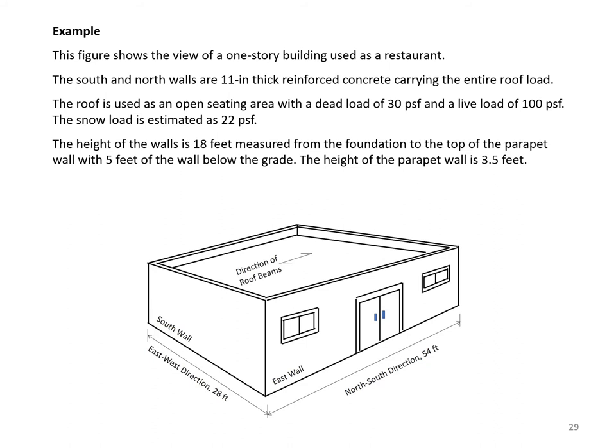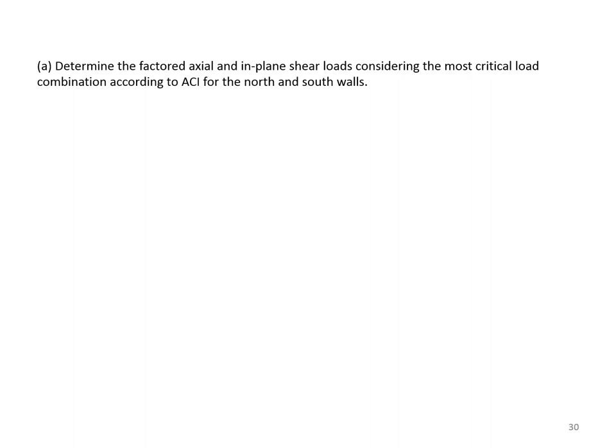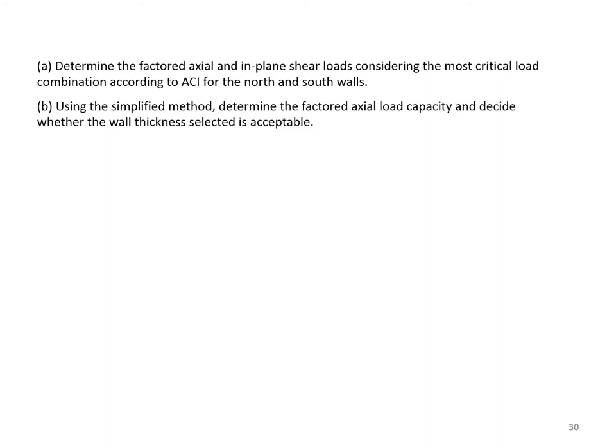The north and south walls act as shear walls against east-west wind pressure of 20 psf including all necessary factors. Concrete strength f'c = 3,000 psi. We want to determine the factored axial and in-plane shear loads using the most critical ACI load combination for the north and south walls, then determine the factored axial load capacity using the simplified method and decide if the wall thickness is acceptable.